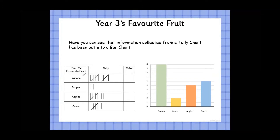Let's double-check that this has been done correctly. We've got 10 bananas, and we have 10 bananas. We have 2 grapes altogether, and here we have 2 grapes. We have 5, 6, 7 apples — and here we have 5. I want you to pause the video and have a think about how many we need to add on in our bar chart to make it match the tally.